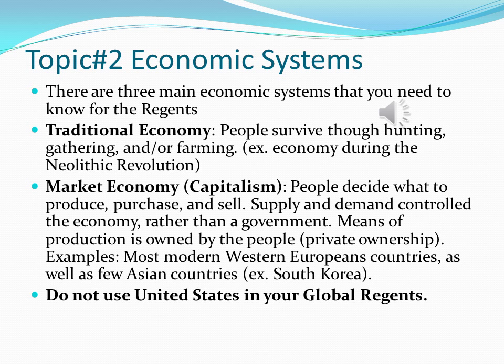The second one is the market economy, also known as capitalism. That's where people decide what to produce, purchase, or sell. Supply and demand control the economy rather than government. The means of production is owned by the people — private ownership. Most modern Western European countries, as well as a few Asian countries, use this system. An example would be South Korea.